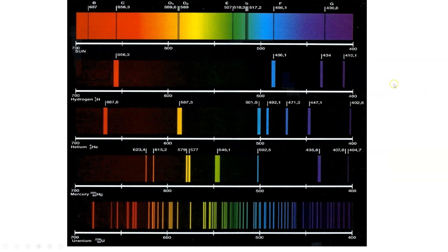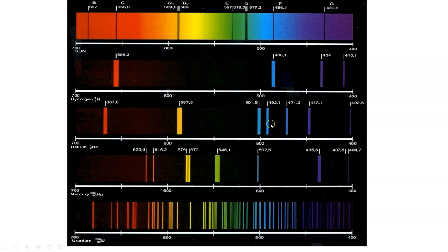Here are the different spectra again. This top one is a continuous spectrum — this is sunlight. Then you have specific elements: hydrogen with its specific pattern, helium with its specific pattern, mercury, and uranium — they all have specific patterns. The more electrons an element has, the more interesting the pattern. Hydrogen only has four bands, but helium has seven bands. The number of bands increases as you have more electrons.